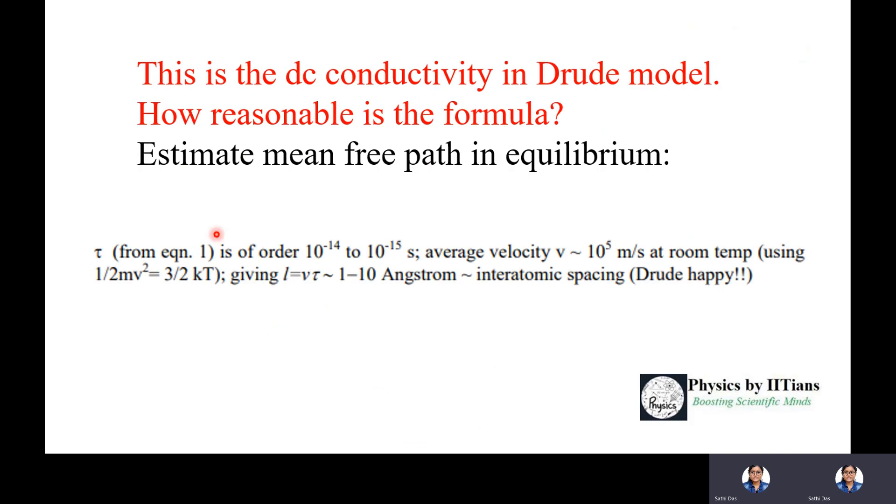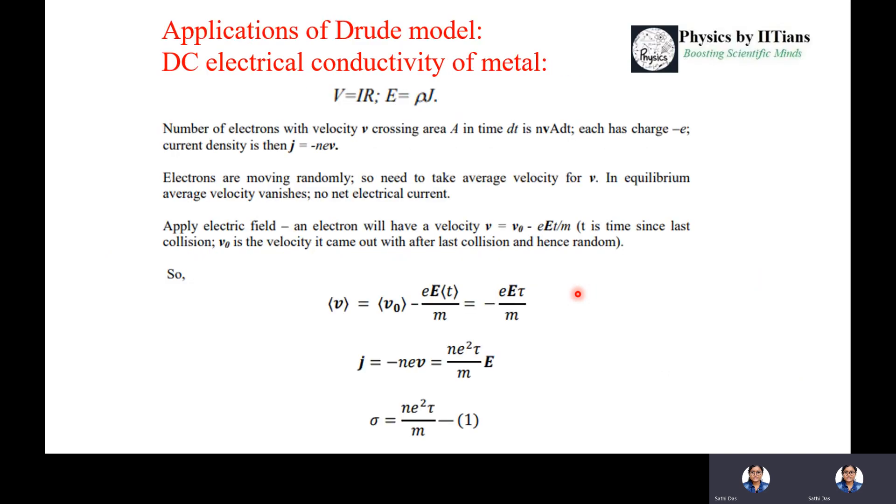How reasonable is the formula? Let's estimate the mean free path in equilibrium. Taking τ of order 10^-14 to 10^-15 seconds and average velocity v as 10^5 m/s at room temperature (using ½mv² = 3/2 kT), we get mean free path l of order 1-10 Angstroms, which is interatomic spacing inside a metal. So Drude was pretty happy because his formula can explain the dimensions and quantities pretty well.